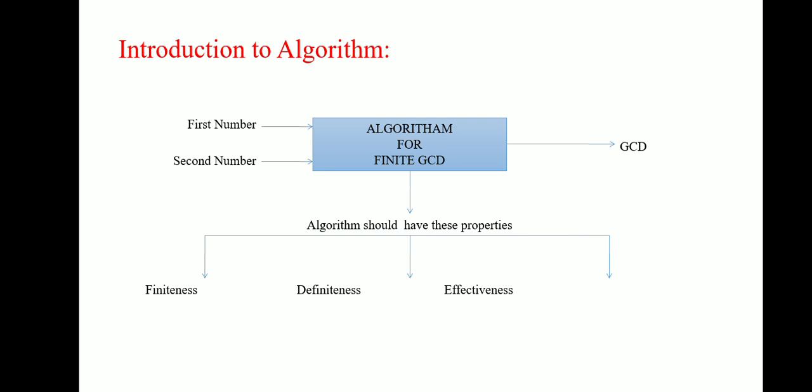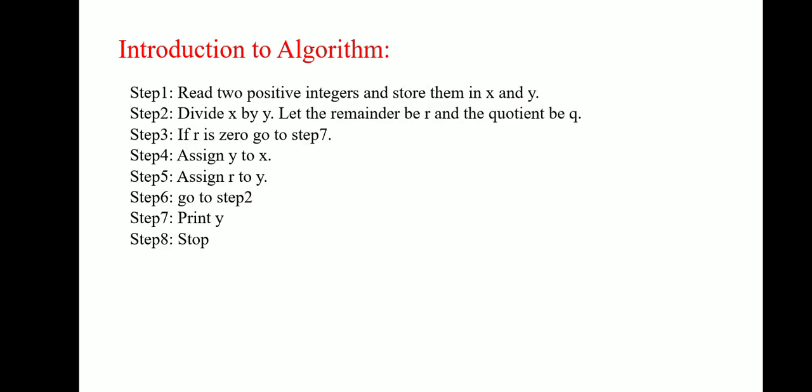Let us consider one example. This is the algorithm where step one: read two positive integers and store them in X and Y. Let us consider there are two integers, first integer is 15, another integer is 6. We will read 15 as X and 6 as Y.